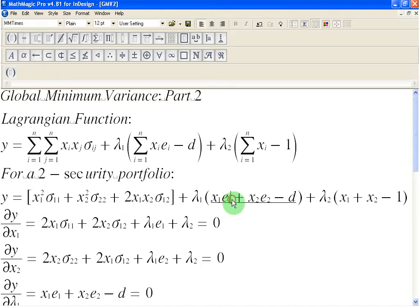And in this bracket here, what I have done is I have written down the lambda 1 as it is from here. And then I have expanded this function here by allowing I to become 1 first, so that this term is X1 times E1. And then when I becomes 2, I get another term X2 times E2. And after that, I copy and paste this minus D as it is.